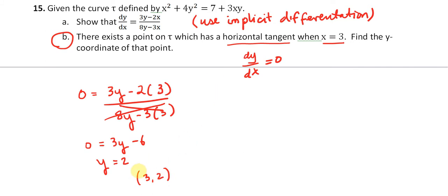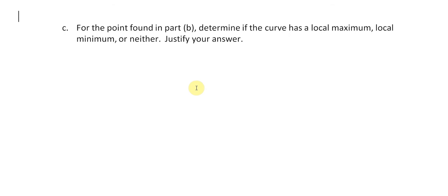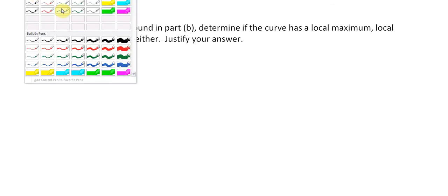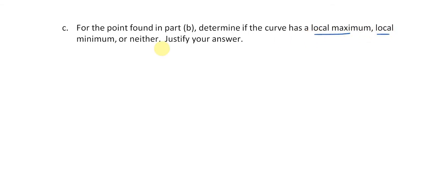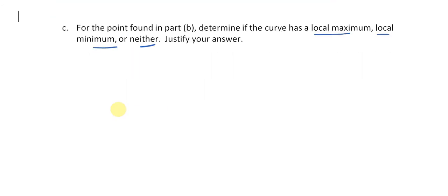Now we move on to part c, which asks: given the point we found, determine whether the curve has a local maximum, a local minimum, or neither. Normally we'd use a sign chart with the first derivative test, but because the derivative is given in terms of both y and x, we really don't have a choice except to use the second derivative test.